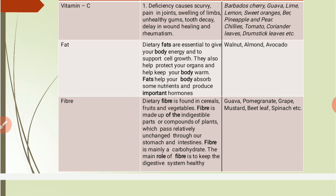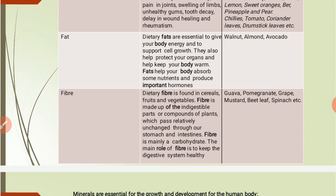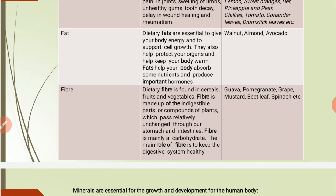Dietary fiber is found in cereals, fruits, and vegetables. Fiber is made up of the indigestible parts or compounds of plants which pass relatively unchanged through our stomach and intestines. Fiber is mainly a carbohydrate, and its main role is to keep the digestive system healthy. Sources of fiber include guava, pomegranate, grape, mustard, beet leaf, spinach, and coriander in the case of vegetables.